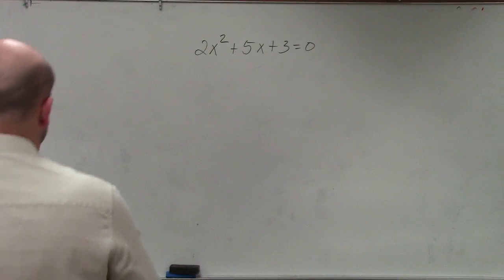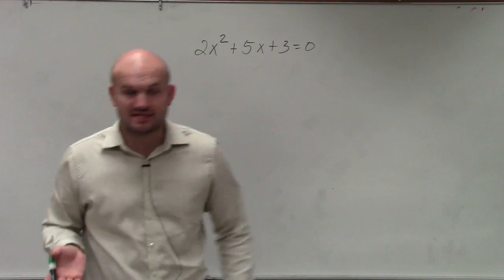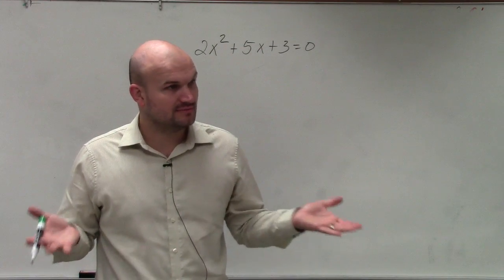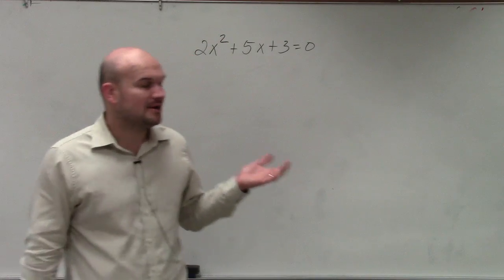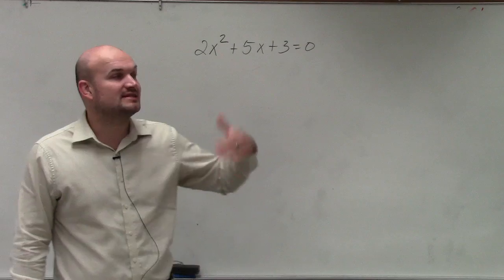In this example, ladies and gentlemen, if we're doing Descartes' rule of signs, all Descartes' rule of signs tells us is the number of possible rational zeros. Just tells us the number of possible, I'm sorry, the number of possible real positive, real negative, and imaginary zeros.